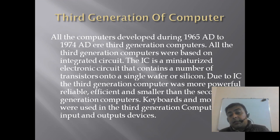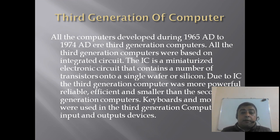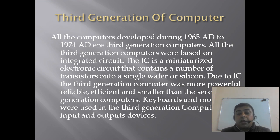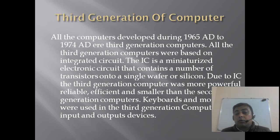The next generation is the third generation. All the computers developed during 1965 AD to 1974 AD were third generation computers. All the third generation computers were based on integrated circuits, or ICs. IC replaced the transistor in the third generation. The IC is a miniaturized electronic circuit that contains a number of transistors on a single wafer of silicon. Due to ICs, the third generation computers were more powerful, reliable, efficient and smaller than the second generation of computers.